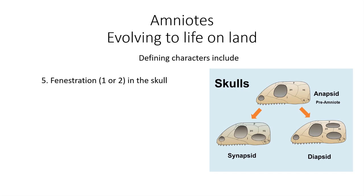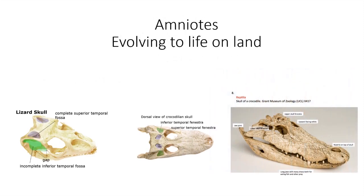The last characteristic is the fenestration of the skull. Fenestra means window or opening, and you usually have one or two openings in the skull. There are some amniotes that have zero, and that might be a derived condition or it could be plesiomorphic. In general, mammals — which are the synapsids — have one temporal fenestra, whereas the diapsids, which are part of sauropsida, have two temporal openings. Here's an alligator skull where you can see the inferior and superior temporal fenestra.